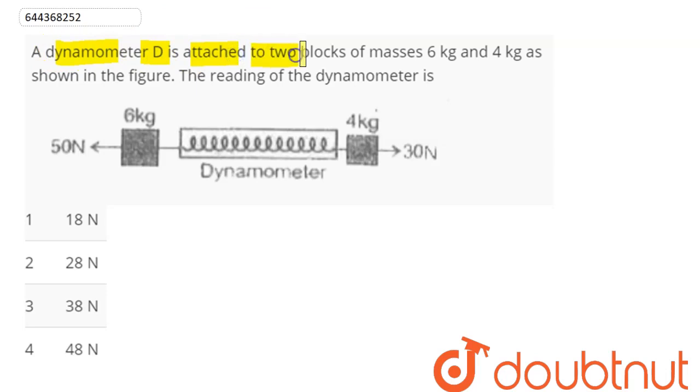The question is: A dynamometer D is attached to two blocks of masses 6 kg and 4 kg as shown in the figure. The reading of the dynamometer is? A dynamometer is simply a spring attached here, so we need to find the spring force.